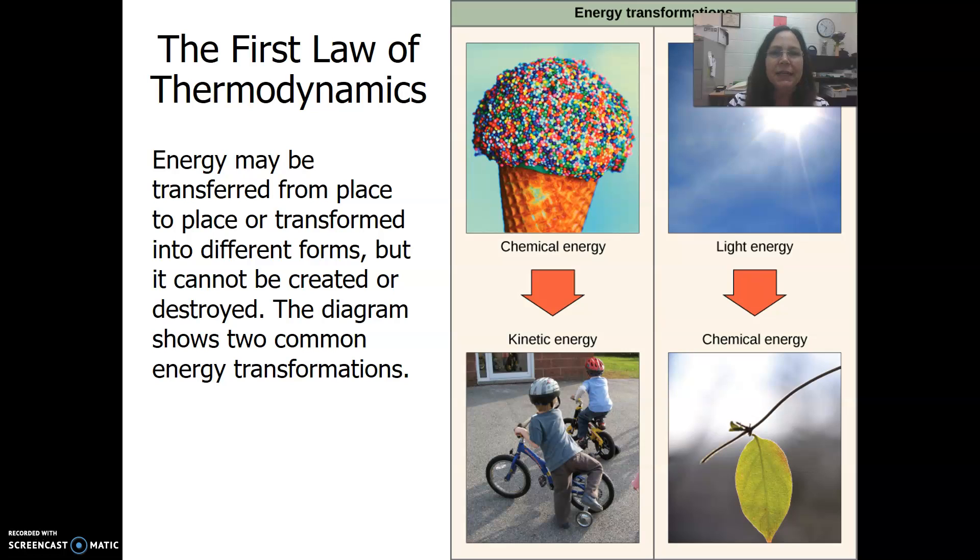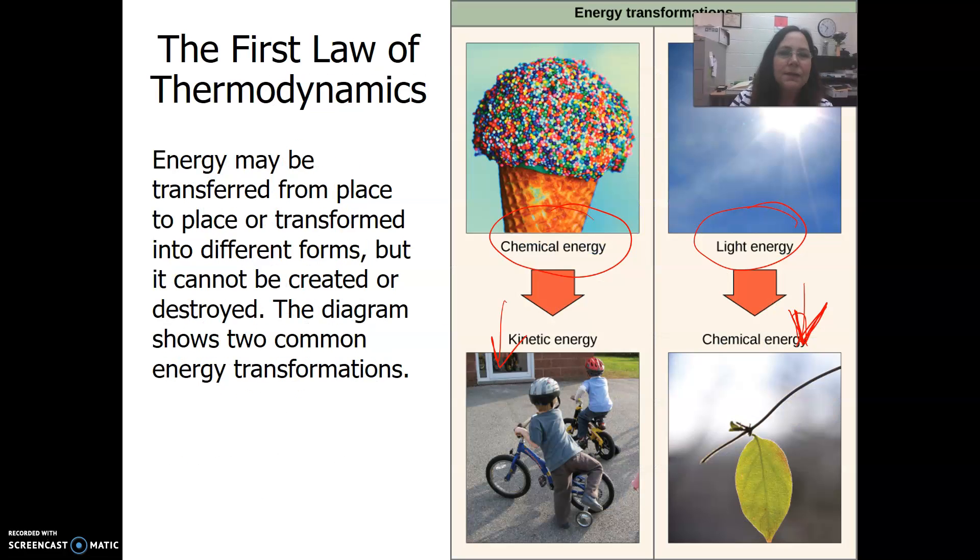Changes in energy. So, energy transformations involve chemical energy converting to kinetic energy. There's chemical energy in the food we eat that gives us energy to move and breathe. And for plants, there's energy and sunlight that gives them the chemical energy to carry out photosynthesis and make their own food.